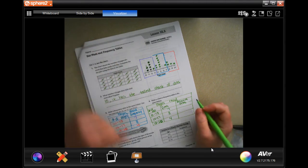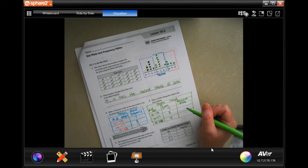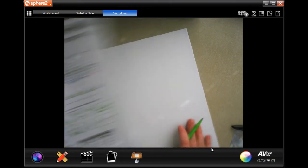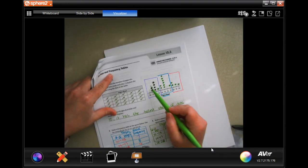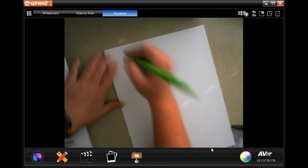Okay, now the difference is, in order to find the relative frequency, we're going to find what percent each one of those was. So all together we have one, two, three, four, five, six, seven, eight, nine, ten, eleven, twelve, thirteen, fourteen, fifteen, sixteen, seventeen, nineteen, twenty.